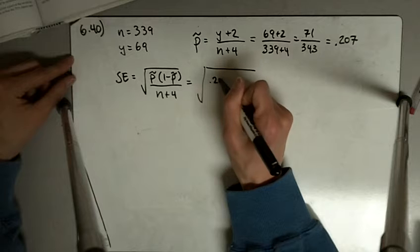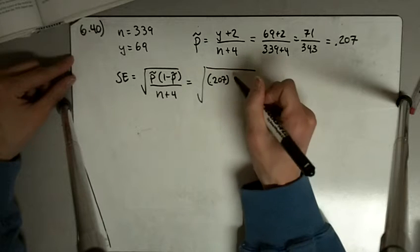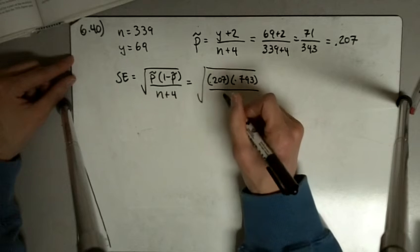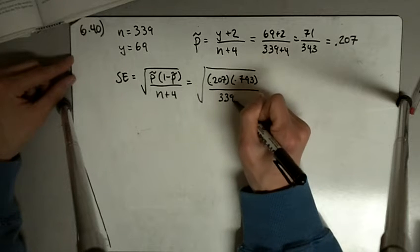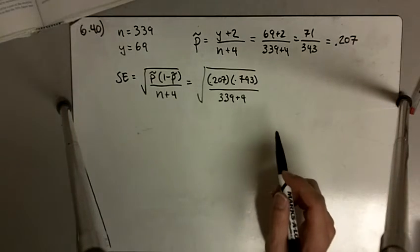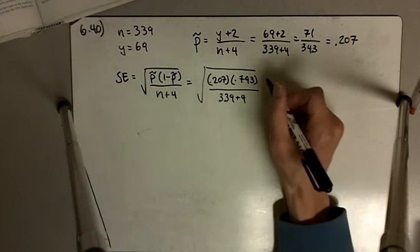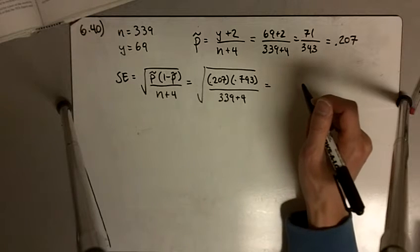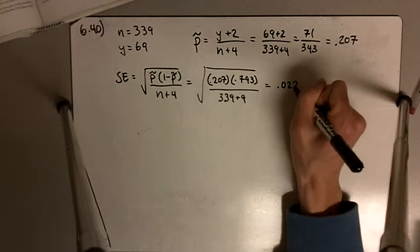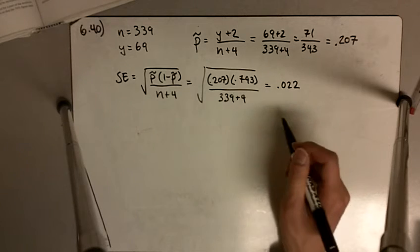So we get 0.207 times (1 minus that), so 0.793, divided by (n + 4), 339 plus 4. And if you do this calculation, multiply and divide, you should get 0.022. So that's our standard error.